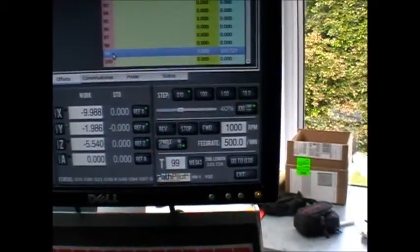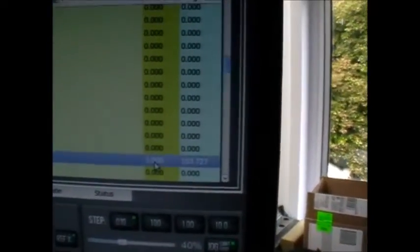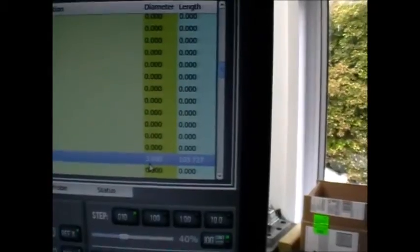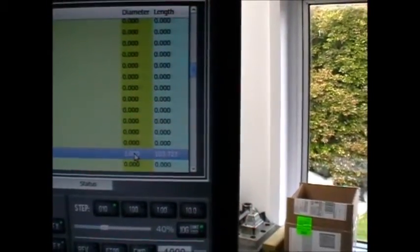So let's go to offsets. This is tool number 99 and that's the probe and I've set it at 3mm which by micrometer measurement is the stylus ball diameter.